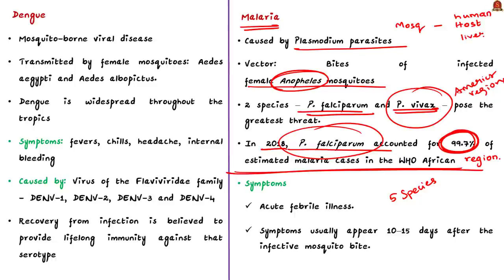One peculiar aspect of the malarial parasite is that half of its life cycle is inside the mosquito and half inside the human host — specifically the liver and RBCs. Malaria manifests as an acute febrile illness. In a non-immune individual, symptoms appear 10 to 15 days after the bite: fever, headache, and chills. If not treated within 24 hours, Plasmodium falciparum malaria can progress to severe illness with high mortality. The dry day campaign, mentioned in a previous discussion, is also relevant here — viewers are asked to recall which state initiated it.